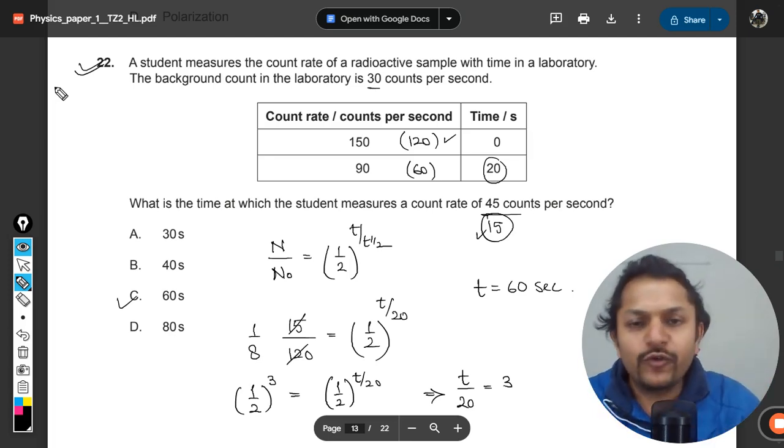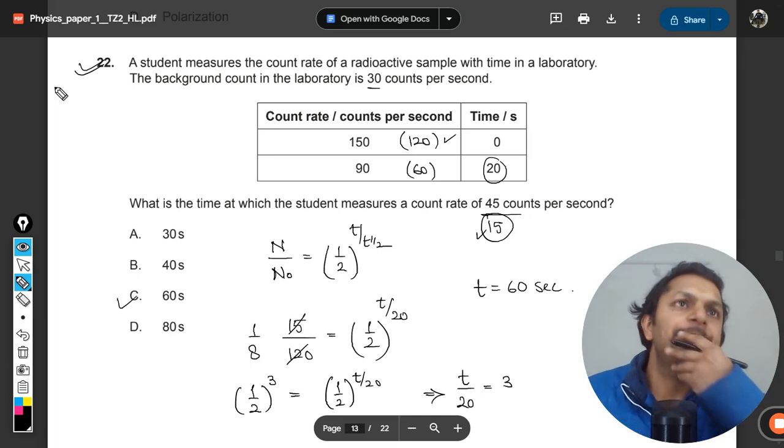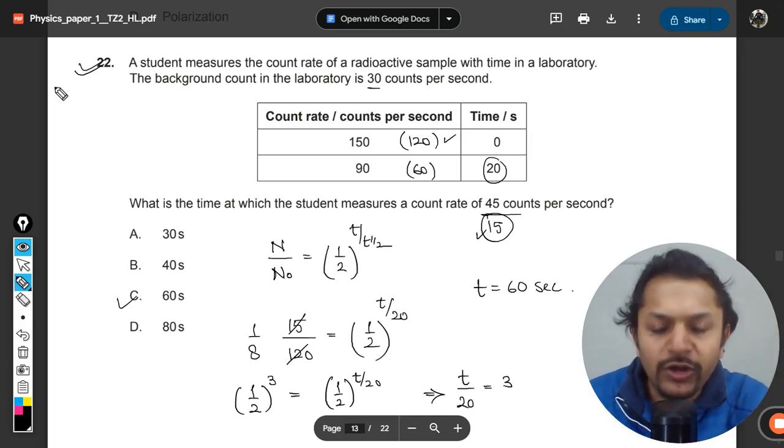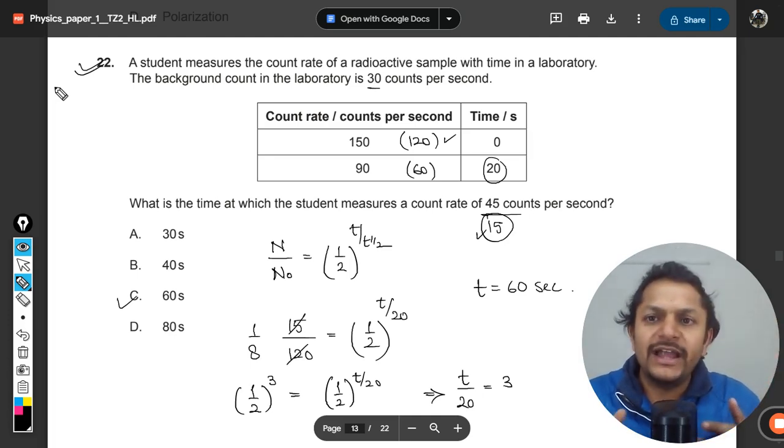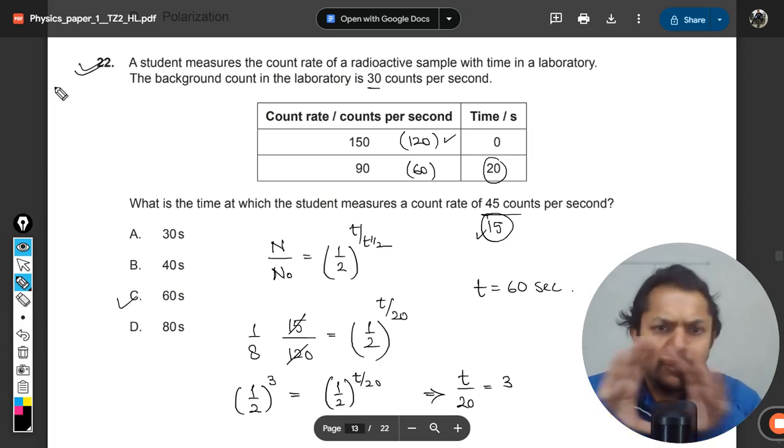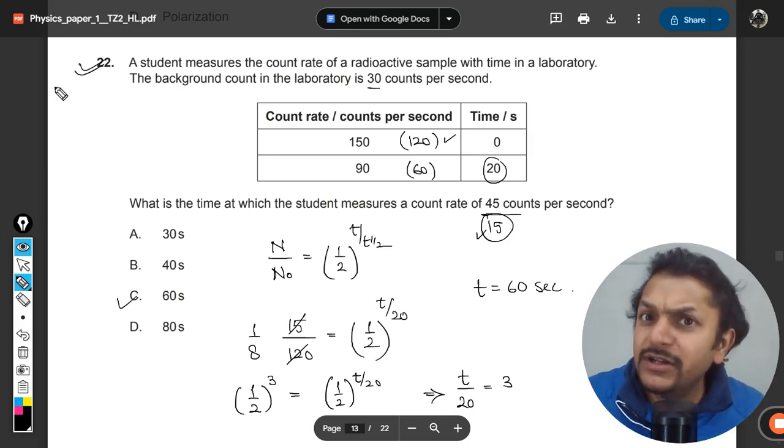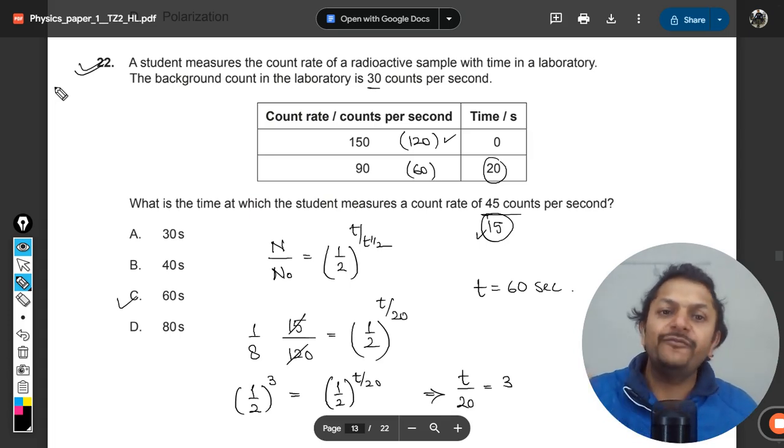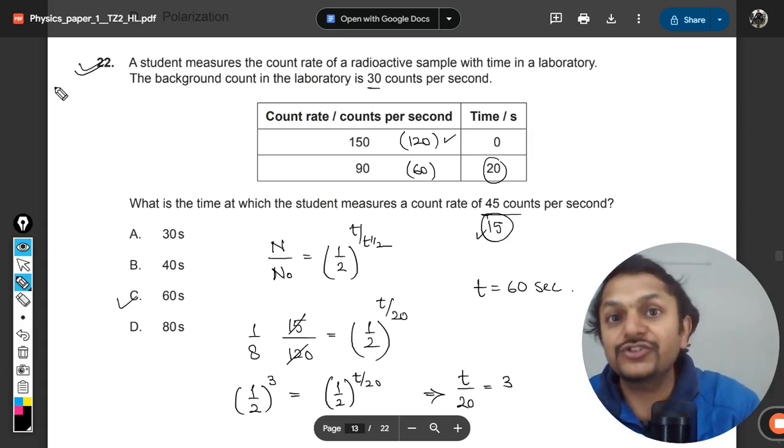There are a couple of paper two questions I have done for this, and paper one also where IB gave graphs and others. Complete analysis has already been done and is available on the YouTube channel.